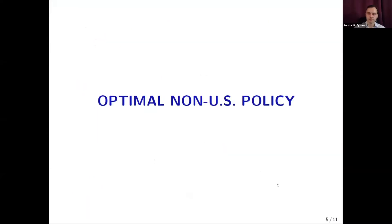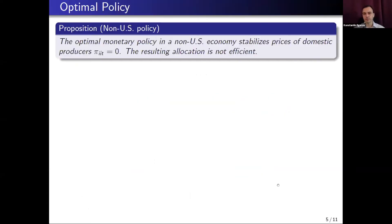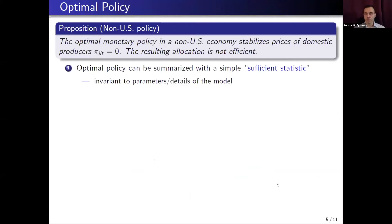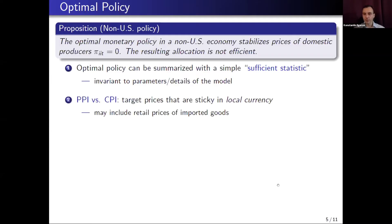It is useful to start with a preliminary lemma. In this setup, the flexible price equilibrium — when we exclude all nominal rigidities — is first-best efficient from the perspective of individual countries under non-cooperative policy. It can also be implemented under producer currency pricing by targeting domestic prices. This corresponds to the conventional wisdom that the main problem is nominal rigidity, and under producer currency pricing it can be completely overcome by optimal policy focusing on domestic targets.